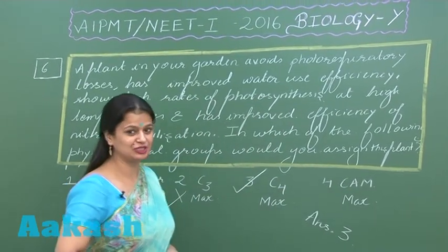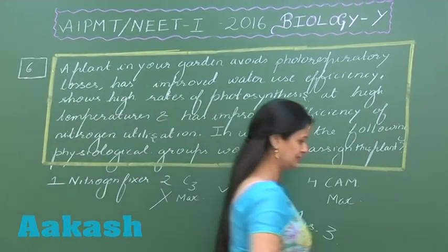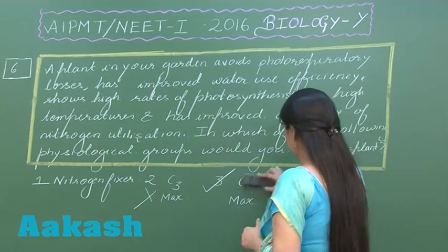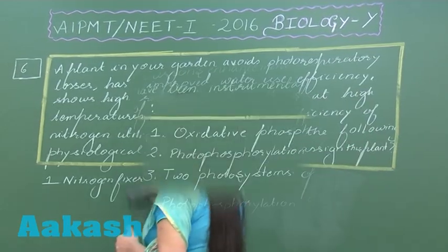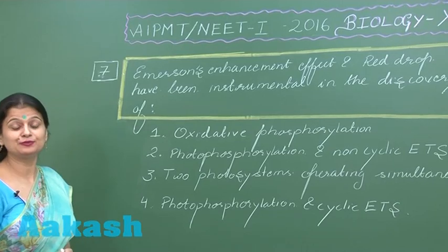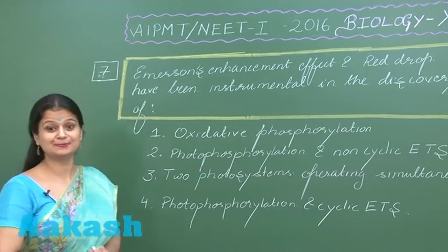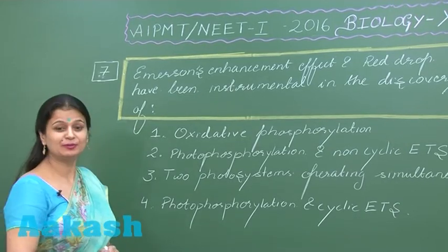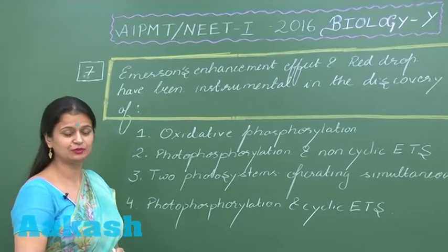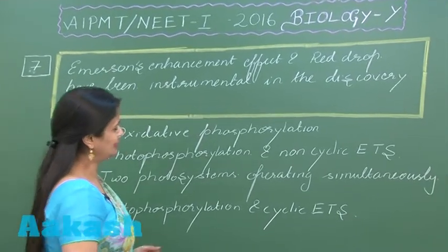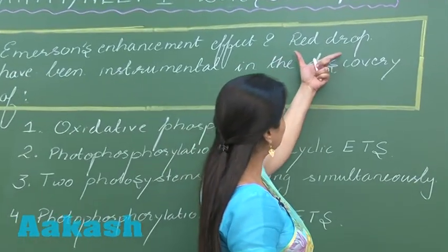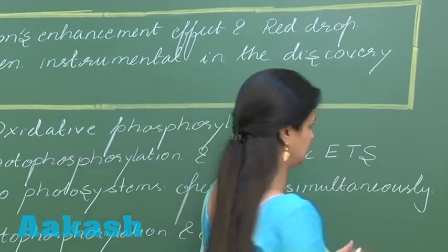Let's move on to question number seven, which is related to photosynthetic experiments — the very important experiment performed by the scientist Emerson on Chlorella. Now let's look into this part of the experiment, which is the red drop effect.